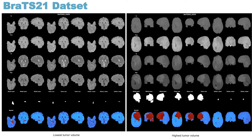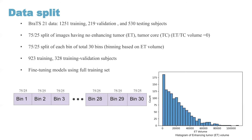The dataset contains 2,000 MRI sessions, each having four modalities per subject. Among them, 1,251 subjects are for training, 219 subjects for validation, and 530 subjects for testing. Training and validation subjects are open to participants, but testing subjects are not revealed, as the organizer will evaluate the performance score based on the submitted model.